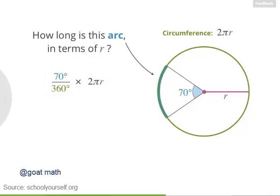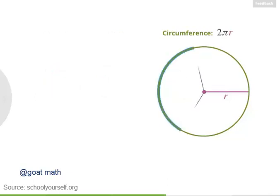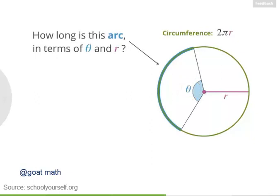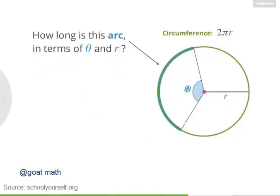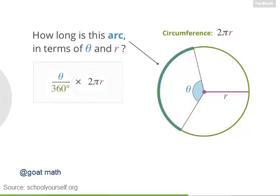Can you come up with a general formula? Suppose you have an arc whose central angle is theta. First, divide theta by 360 degrees — this fraction tells you how much of the circle the arc represents. Then, to find the arc length, multiply by the circumference 2πr. This is the general formula for finding the length of an arc. You want to figure out what fraction of the circle the arc represents, then multiply that by the circumference.